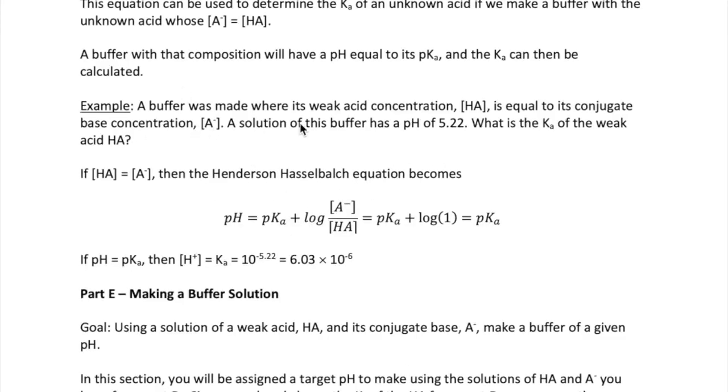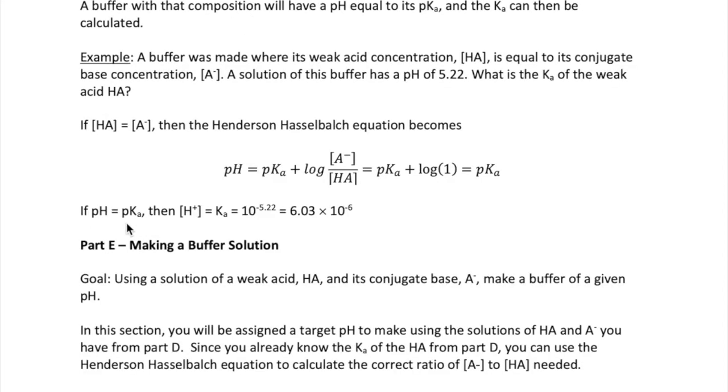Here's an example. You made such a buffer and its pH is 5.22. What is its Ka? As I said, if HA is equal to A minus, then the Henderson-Hasselbalch equation becomes pH equals pKa. If pH is equal to pKa and pH is 5.22, then pKa is also 5.22, which means that Ka is just 10 to the power of minus 5.22, which is 6.03 times 10 to the minus 6. So that's how you're going to do the calculations for part D.